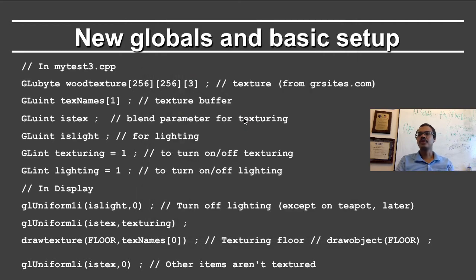I've defined a bunch of globals to set up the texture. The wood texture is a 256 by 256 RGB texture map. I have a texture buffer given by texNames. IsTex is a parameter for texturing, and IsLight, similarly, is for lighting. I have these texturing and lighting flags to turn on and off texturing and lighting.